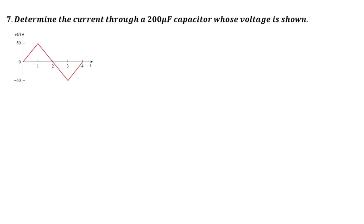In this lesson, we are going to solve question number 7, where we determine the current through a 200 microfarad capacitor whose voltage is shown in the graph below. We have a voltage versus time graph that describes the voltage across the capacitor.